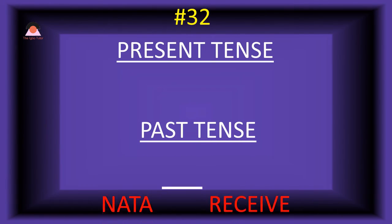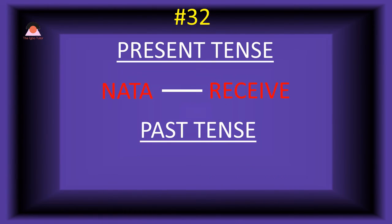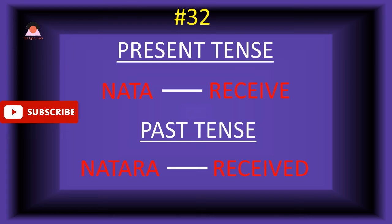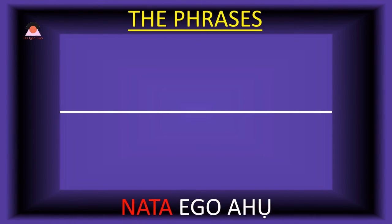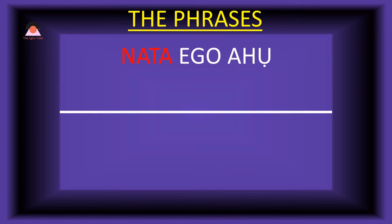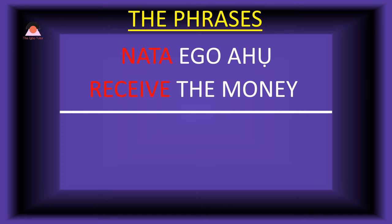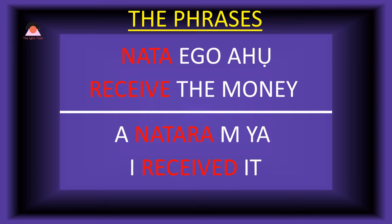Word number thirty-two: 'nata,' meaning 'receive.' The past tense of nata is 'natara,' meaning 'received.' Present tense phrase: 'nata ego aha' — receive the money. Past tense: 'a-natara miya' — I received it.